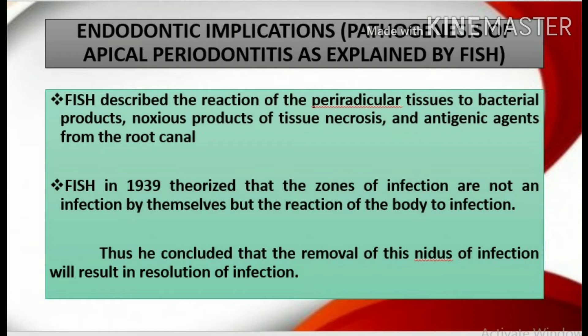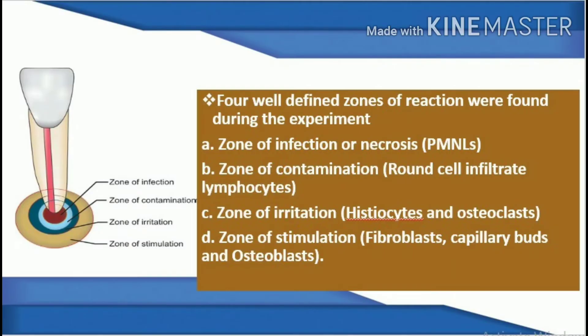Endodontic implications — pathogenesis of apical periodontitis as explained by Fish: Fish described the reaction of periradicular tissues to bacterial products, noxious products of tissue necrosis, and antigenic agents from the root canal. In 1939, Fish theorized that the zones of infection are not an infection by themselves but the body's reaction to infection, concluding that removal of the nidus of infection will result in resolution. Four well-defined zones were identified: zone of infection or necrosis, zone of contamination (round cell infiltrate — lymphocytes), zone of irritation (histiocytes and osteoclasts), and zone of stimulation (fibroblasts, capillary buds, and osteoblasts).